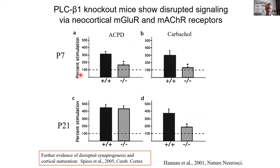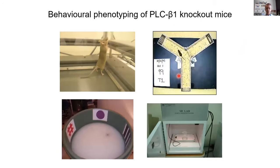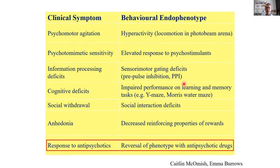We think the upstream signaling involves mGluR5 and some muscarinic acetylcholine receptors. We extracted synaptosomes from the cortex of P7 and P21 wild type and PLC beta 1 knockout mice. By using ligands to these metabotropic glutamate receptors and muscarinic acetylcholine receptors, we were able to show that the absence of PLC beta 1 disrupted signaling through the mGluRs at P7 and through the muscarinic acetylcholine receptors at both of these ages. We then characterized these mice in detail in terms of behavioral endophenotypes, showing a range that map on to schizophrenia — face validity for schizophrenia.